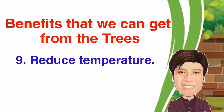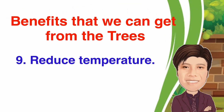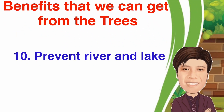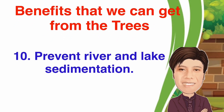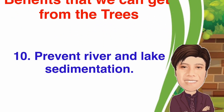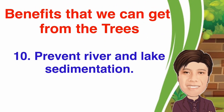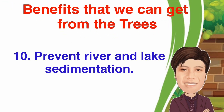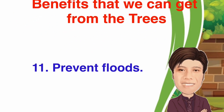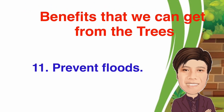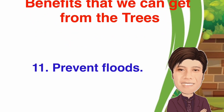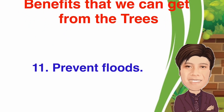8. They contribute to the beautiful landscape in the city and in the countryside. Imagine a land with plenty of trees and grass, and a scattering of flowers of beautiful colors, sizes, and shapes. 9. They improve the atmosphere of the place by giving a feeling of freshness and coolness as they reduce the temperature. 10. They prevent river and lake sedimentation. These trees help hold the water in the lake and rivers and keep it there, preventing them from drying up. 11. They prevent floods. Flood occurs when water from rain rushes and causes soil erosion. However, if there are trees to serve as barriers and roots to hold the water, a flood will not occur.